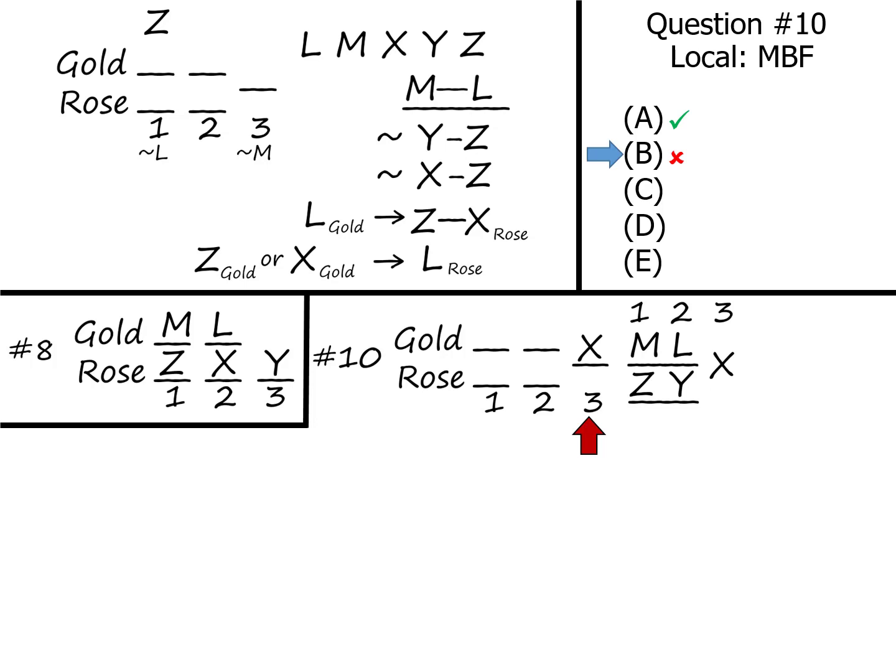Answer choice C says that X is with Y, which could be true. We don't know what room anyone's in. We just know that M and L are together, Z and Y are together, and that those two blocks are in different rooms.